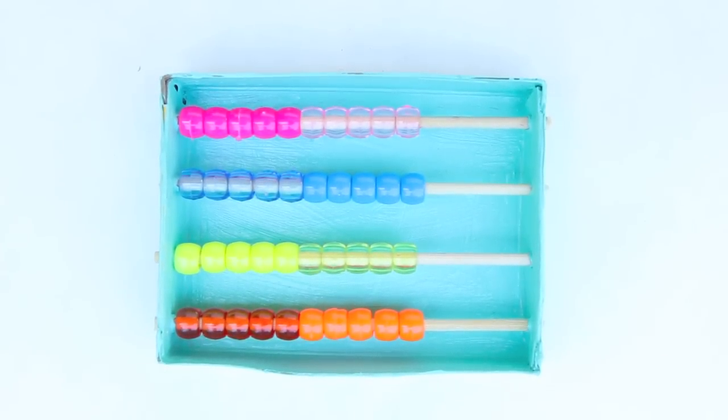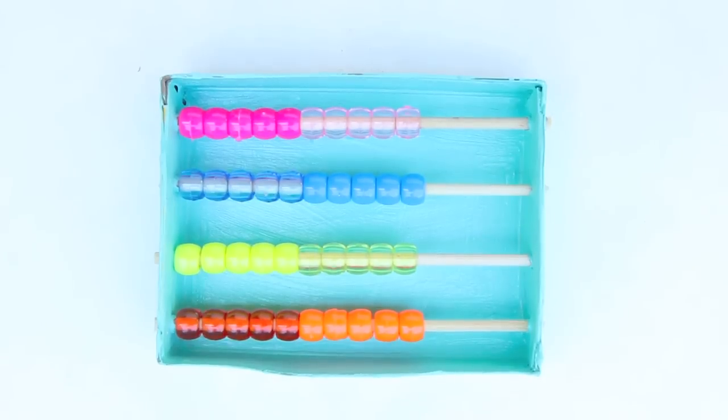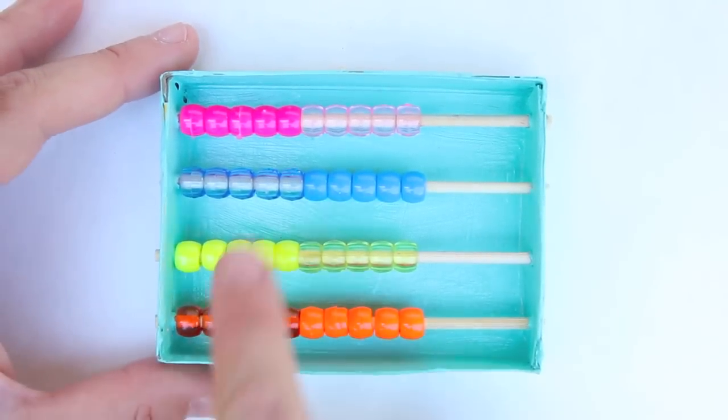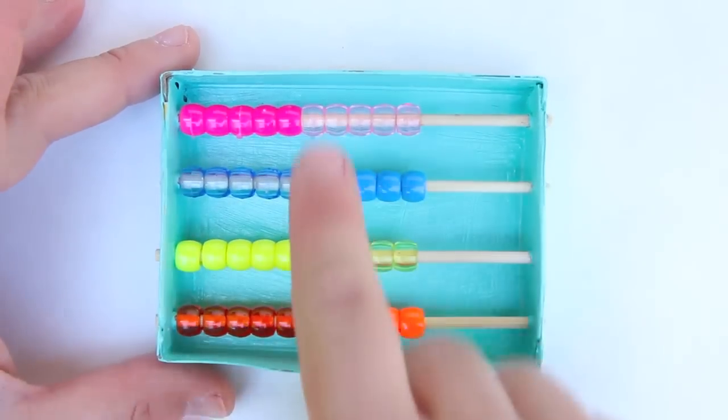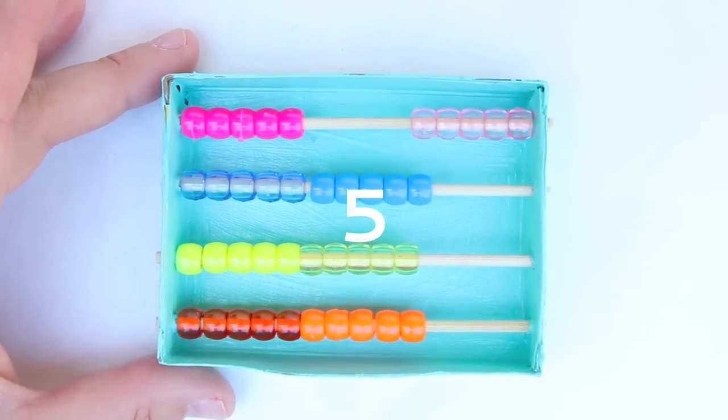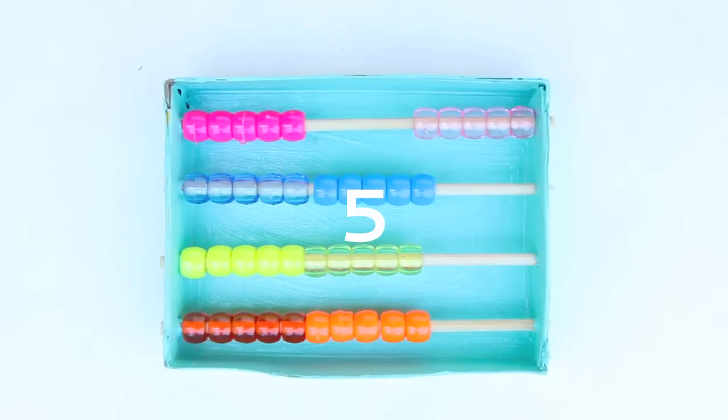Now let's learn how to write a number using an abacus. We'll start with the number five. To write the number five, go to the row that represents the ones and count out five beads. This is how you would write the number five on an abacus.